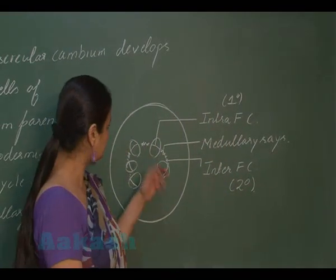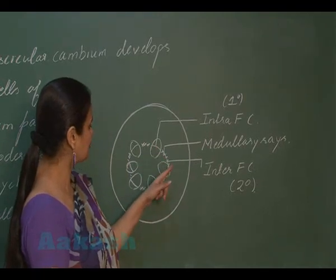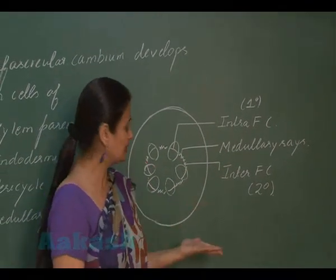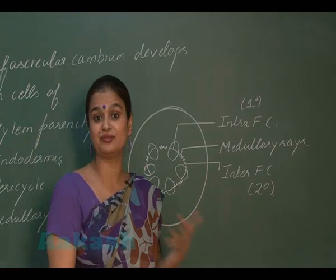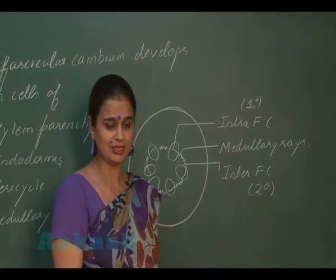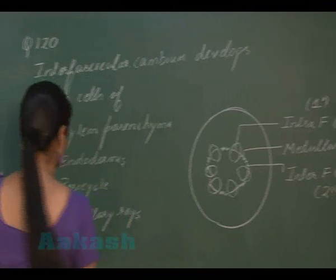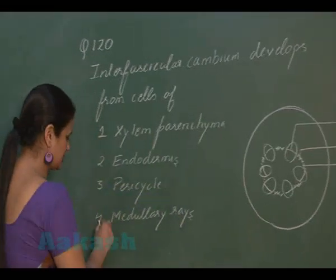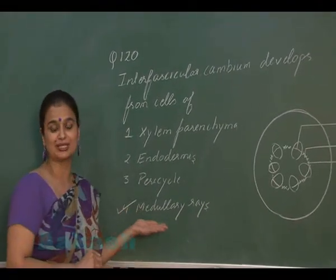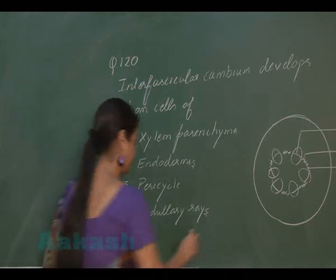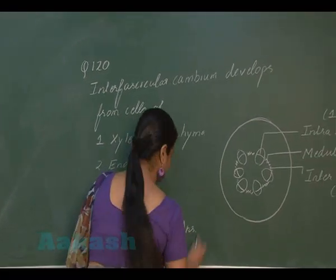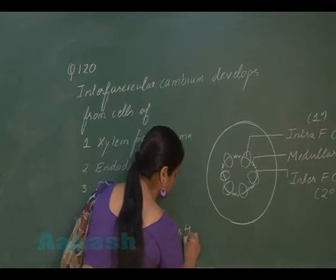The intra- and interfascicular cambium join together, resulting in the formation of the vascular cambium. So the interfascicular cambium is formed from the parenchymatous cells associated with the medullary rays. The correct option for this question is 4.